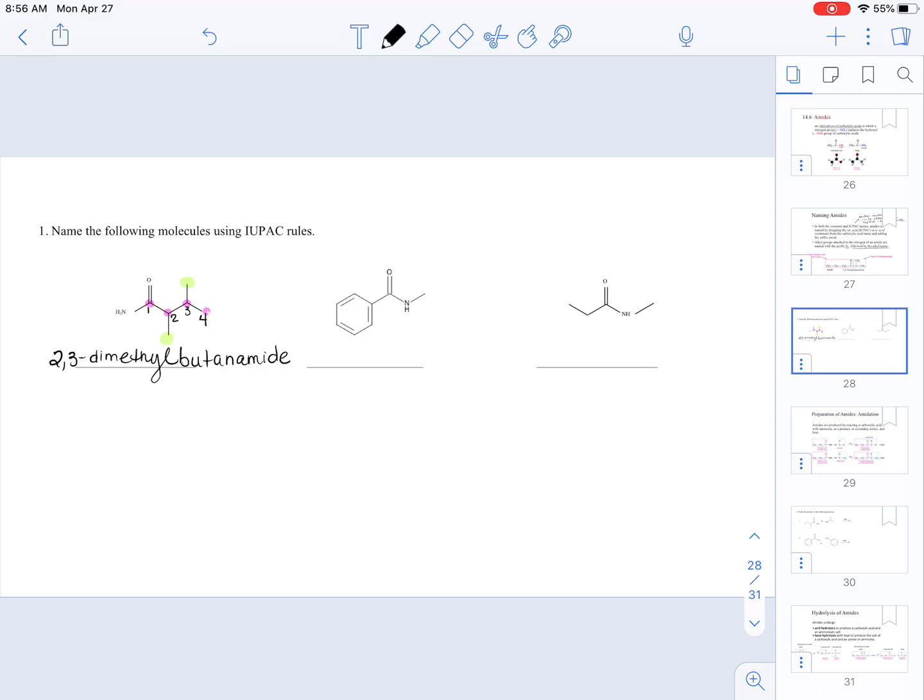Now, in the next molecule, as you can see, this time, we do have a substituent on the nitrogen. When that happens, understand that we're going to put the letter N, the name of the substituent. In this case, it's going to be a methyl group.